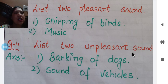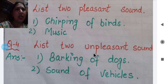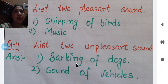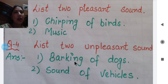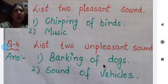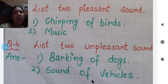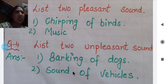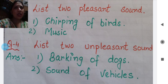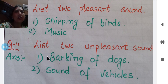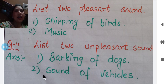Next question: list two unpleasant sounds - जो हमें सुनने में अच्छी नहीं लगतीं। First is barking of dogs - dogs का भूंकना हमें बिलकुल भी अच्छा नहीं लगता। Second is sound of wickers - wickers की चीं-चीं की आवाज़ हमें पसंद नहीं है, हम अपने ears पर hands रख लेते हैं। In the next video we will discuss the next questions. Thank you students.